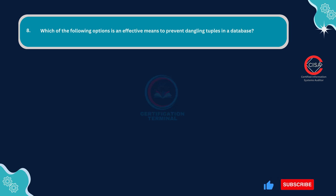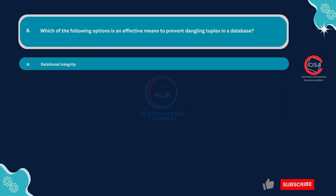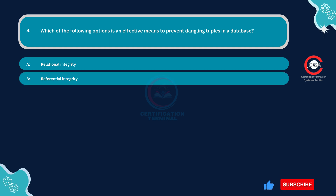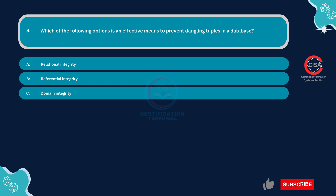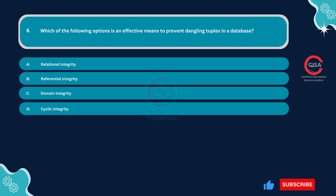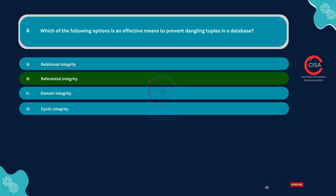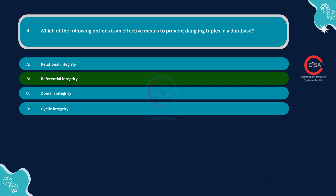Question number eight: Which of the following options is an effective means to prevent dangling tuples in a database? Option A: Relational integrity. Option B: Referential integrity. Option C: Domain integrity. Option D: Cyclic integrity. The correct answer is Option B: Referential integrity.